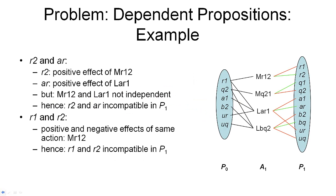Earlier, we looked at independence between actions in the same action layer. We have seen that two actions in the same action layer that are dependent cannot be included in our final layered plan. Now, we will have a look at how this effect propagates through the planning graph. First, we will look at dependent propositions.